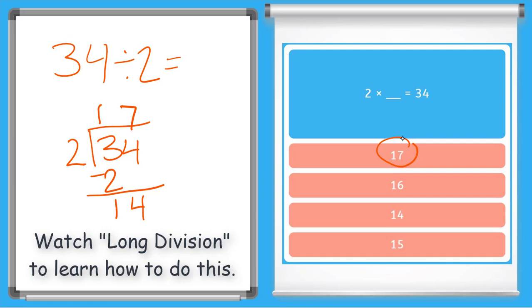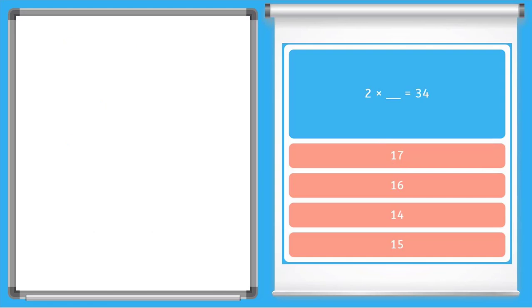Now I can check my work. So we said that our answer was 17. I'm going to check it by multiplying 17 by 2 to see if I get 34. So 2 times 7 is 14, and then 2 times 1 is 2. One more makes 3. 34. So I know my answer was correct.